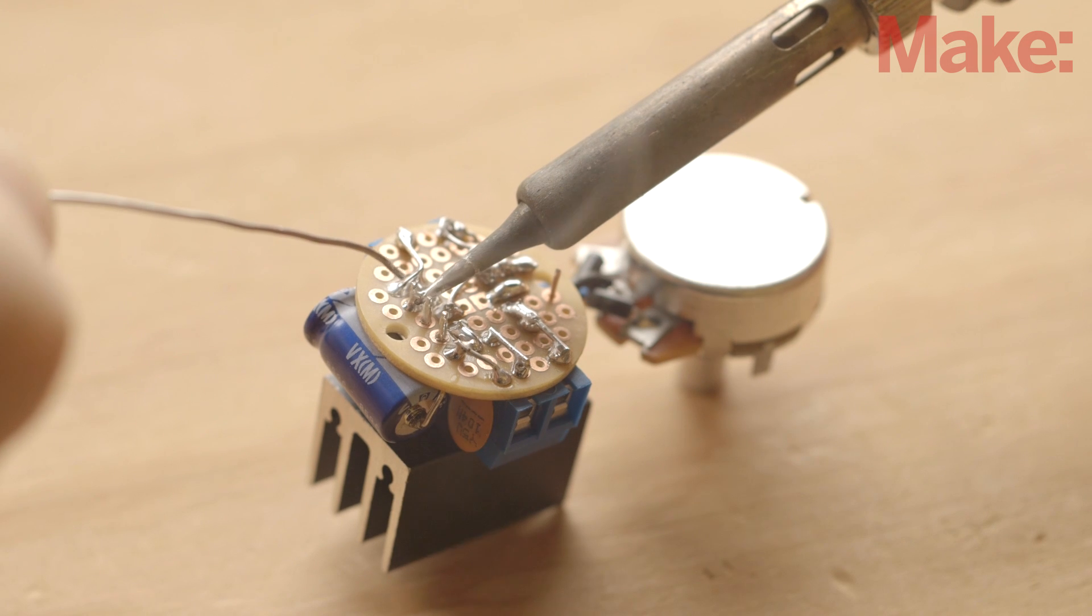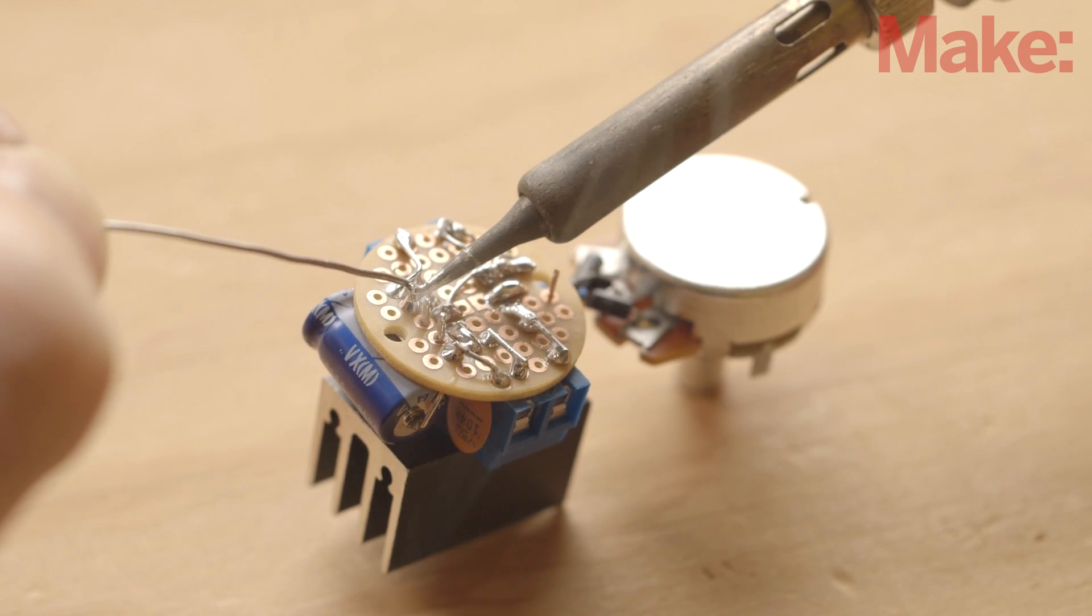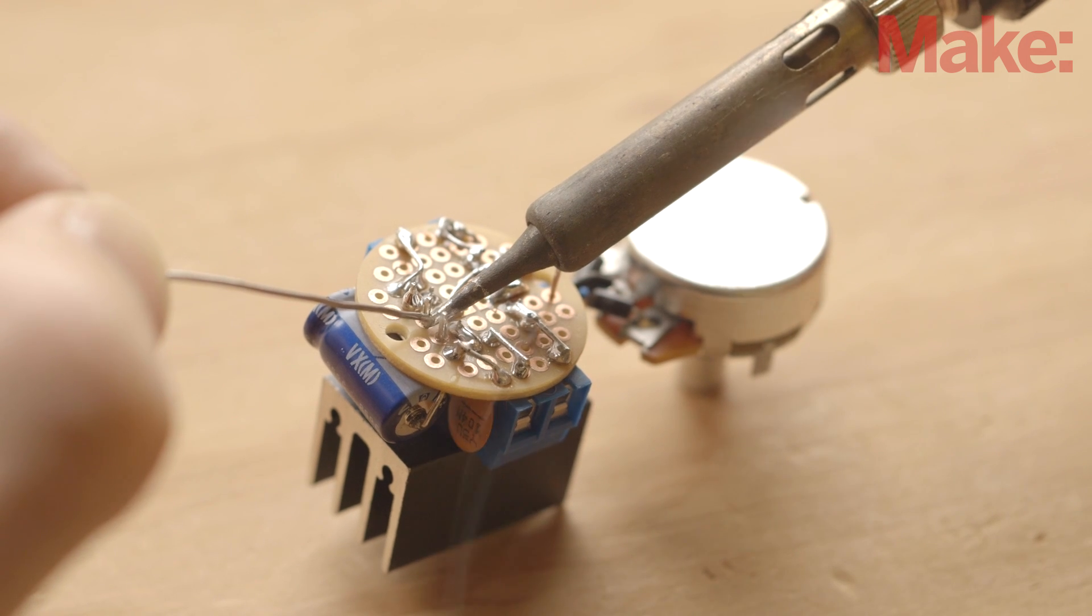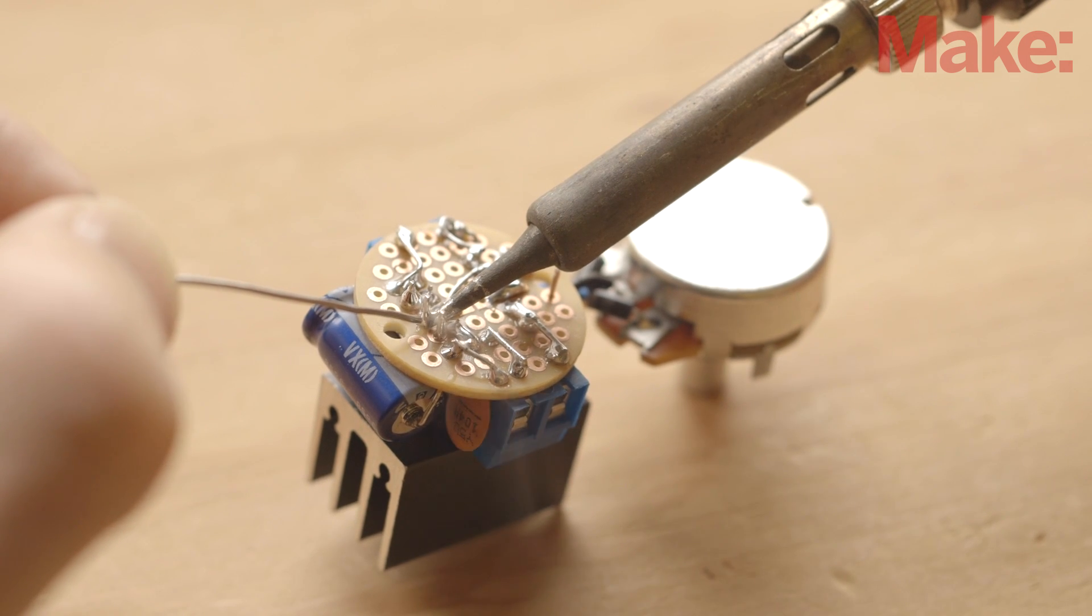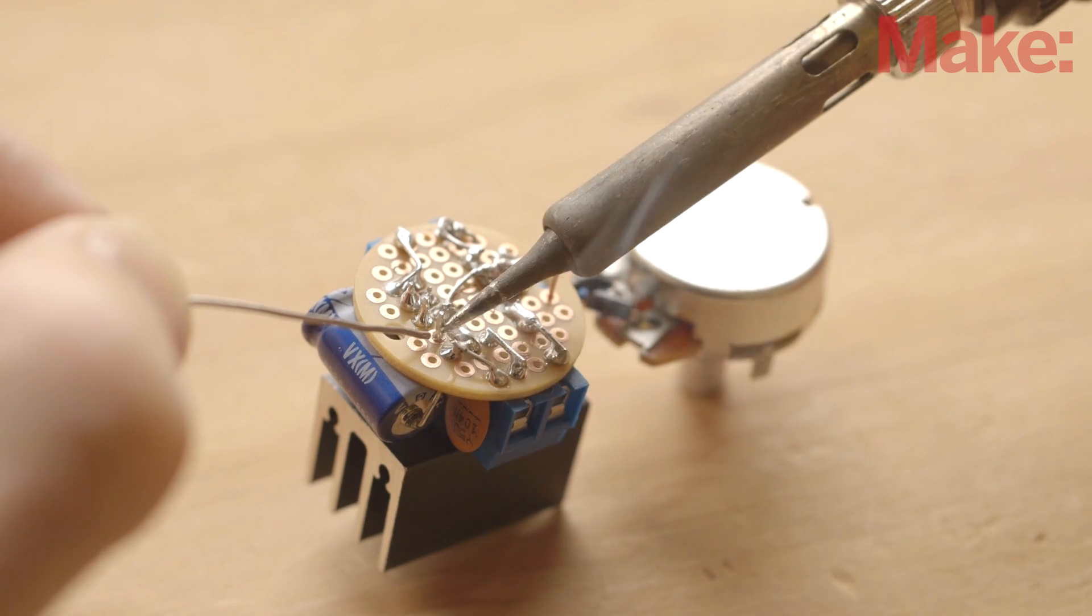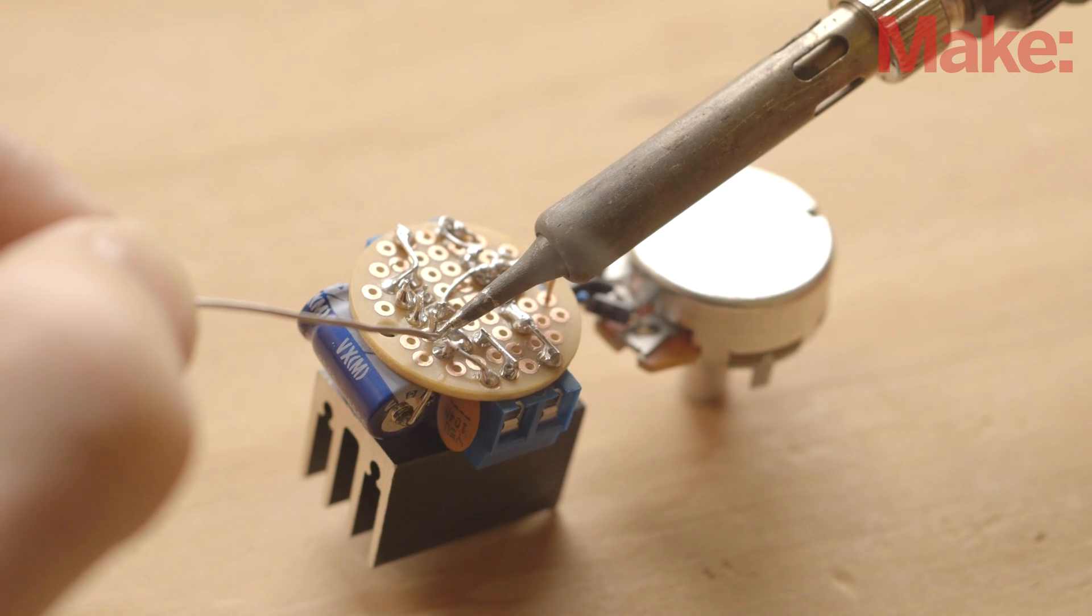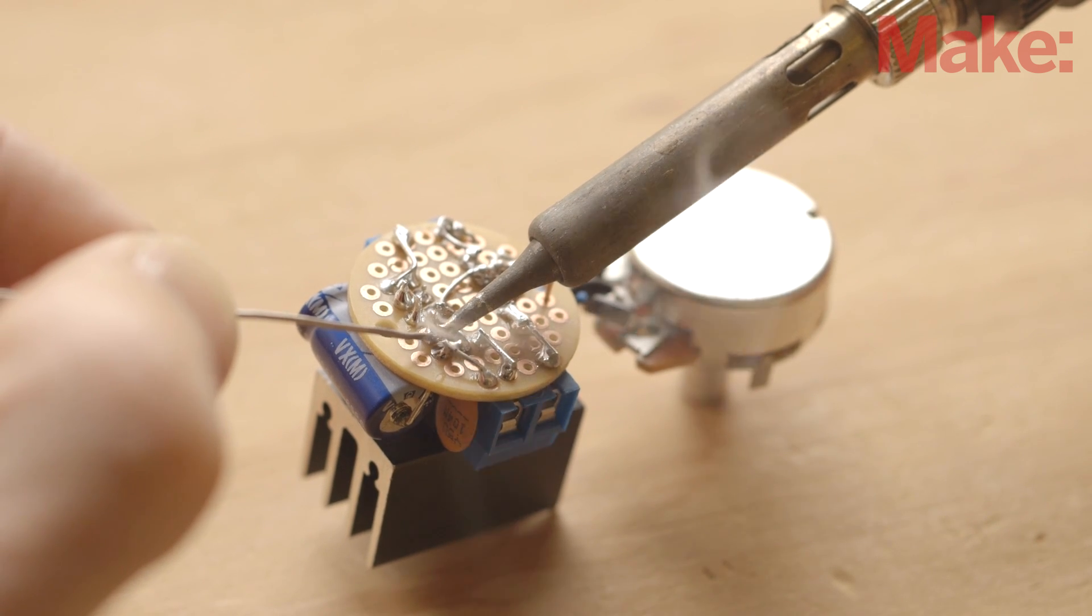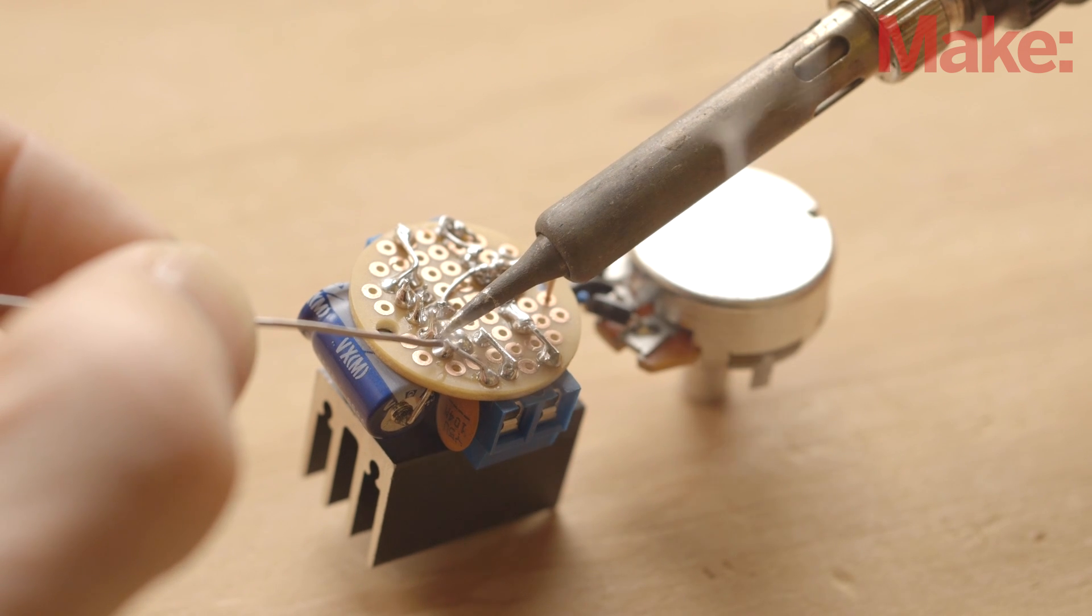Now bend the flange lead down and solder it in place. Then bend the transistor's first lead away from the IC, solder it in place, and reflow the solder at pin number 7. Solder the second transistor lead and cut off any excess metal. Finally, solder the third lead into place and reflow the solder to connect it to the adjacent capacitor lead.